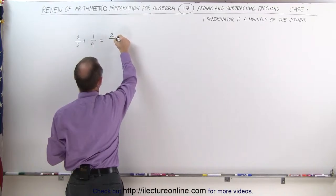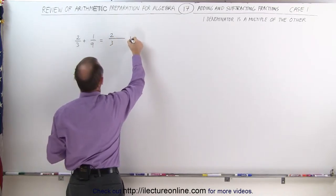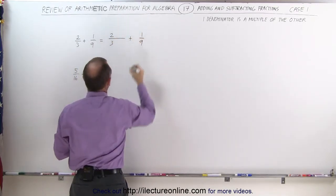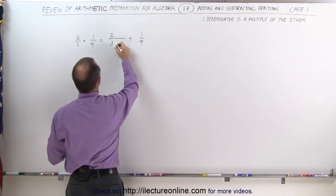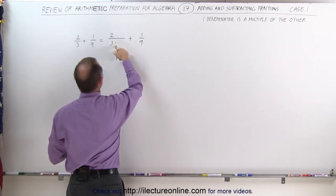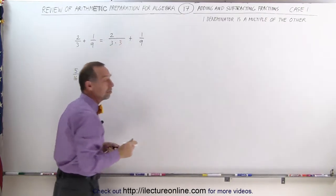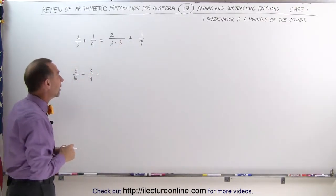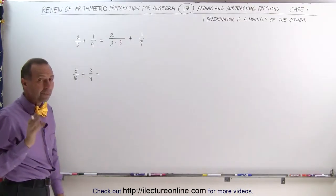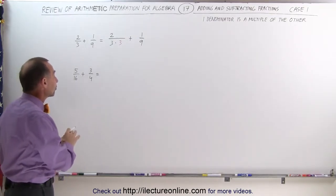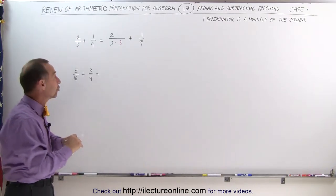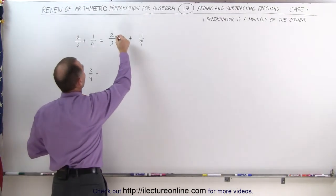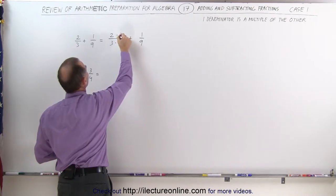We have 2 thirds plus 1 ninth. And so what I need to do here is multiply the denominator of the small denominator here by 3. 3 times 3 gives me 9. So now it would have the same common denominator. But notice if I'm going to multiply the denominator times 3, I must do exactly the same to the numerator. Otherwise my fraction is no longer the same fraction. I must also multiply the numerator times 3.